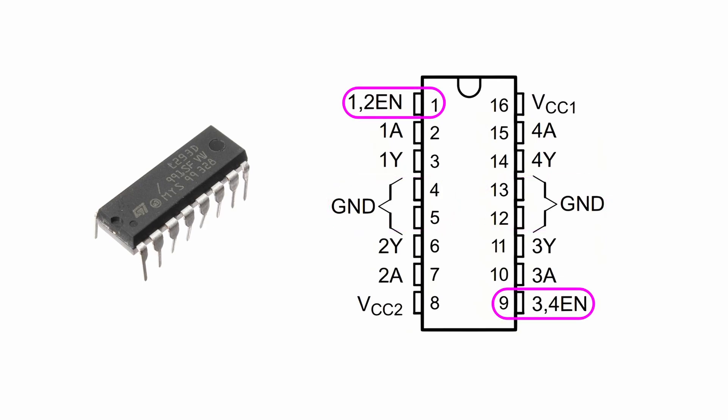Pins 1 and 9 are enable pins for motor start or stop control. Pins 2, 7, 10, and 15, which are 1A, 2A, 3A, and 4A, are control signal input pins connected to the microcontroller to receive control commands.